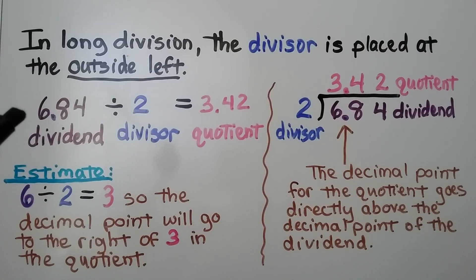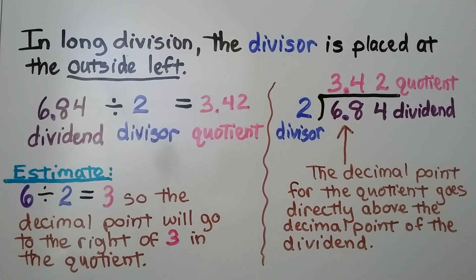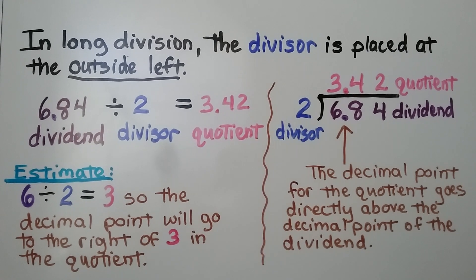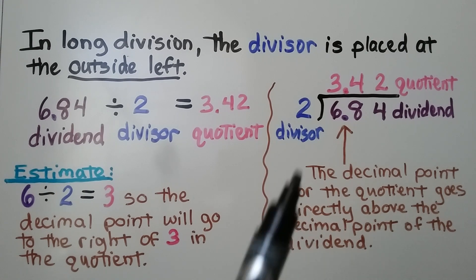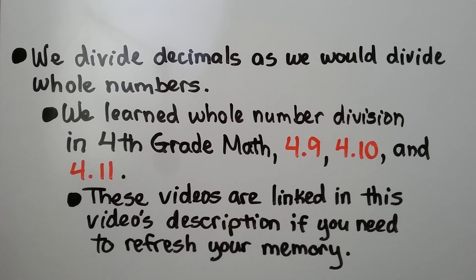Here we have 6 and 84 hundredths divided by 2. This is the dividend, this is the divisor, and our answer is the quotient. In long division, the divisor is placed at the outside left of the problem. We can estimate this as 6 whole divided by 2 is 3, so the decimal point will go to the right of 3 in the quotient, directly above the decimal point for the dividend. We divide decimals as we would divide whole numbers. We learned whole number division in 4th grade math, lessons 4.9, 4.10, and 4.11 — these videos are linked in this video's description if you need to refresh your memory.